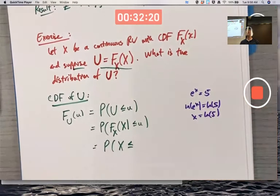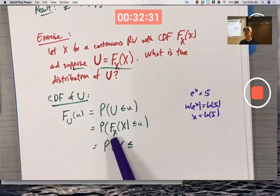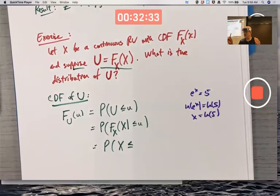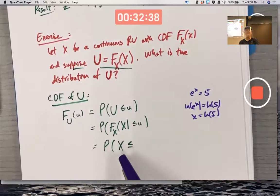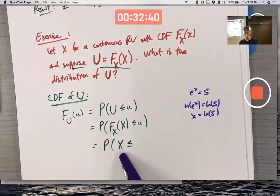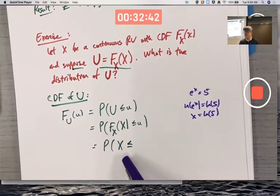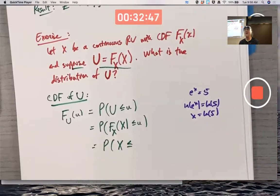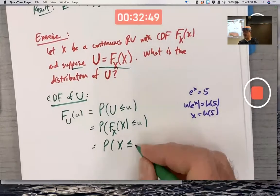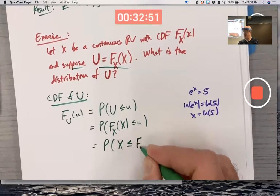You could pretend capital F is like e to the X or something, maybe. To get X isolated, you would take the natural log, the inverse function of both sides of the inequality. That's what we do in the abstract - write capital F sub X with an inverse symbol. That's not negative one power, that's inverse function.